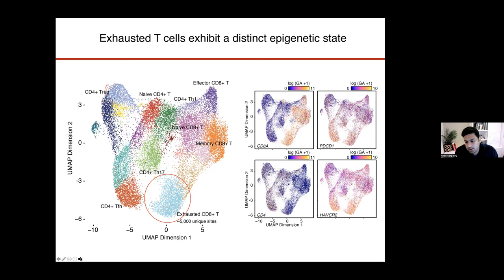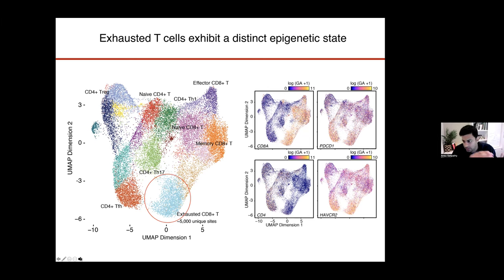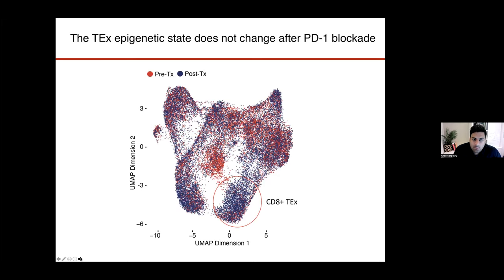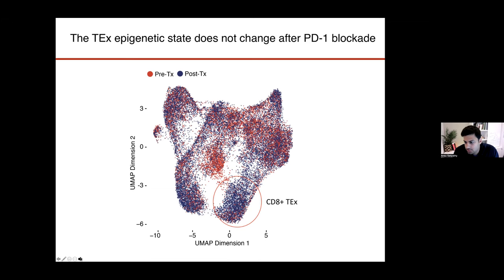In subsequent work, we and others have shown that there's actually a distinct lineage of cells that develops after seeing chronic antigen. As soon as a T-cell begins to see chronic antigen, it develops down a distinct differentiation path of exhaustion, distinct from an effector path. Importantly, if we looked at this data and asked whether cells were derived from a pre-therapy or post-therapy sample, the epigenetic cell state of exhausted T-cells is exactly the same as pre-therapy, suggesting that exhaustion is accompanied by a stable epigenetic state that is not reversed by PD-1 blockade.